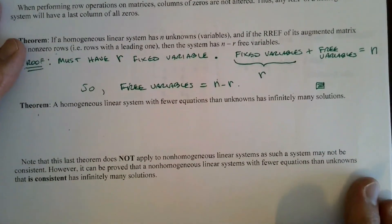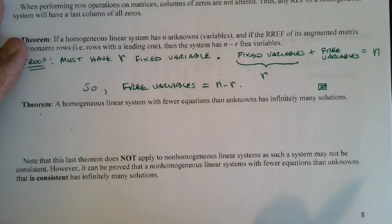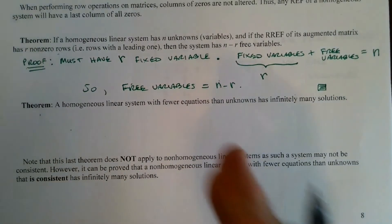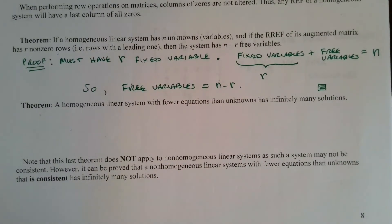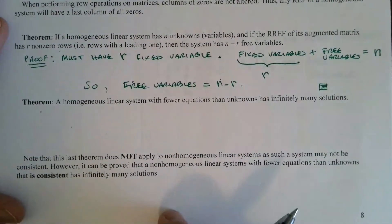Pretty simple. It makes sense: if you have five variables and two non-zero rows, that means two leading ones and two fixed variables, so the remaining three variables must be free. Fixed and free have to add up to the total number of variables.